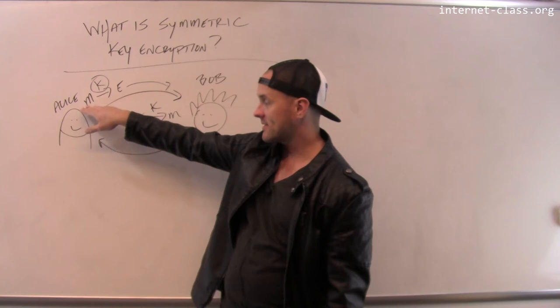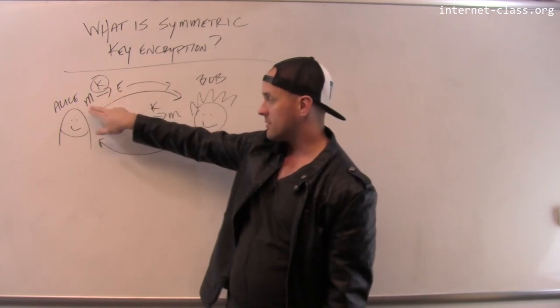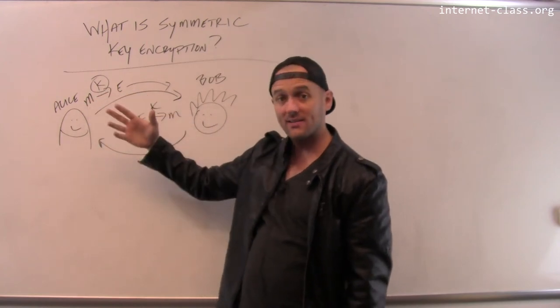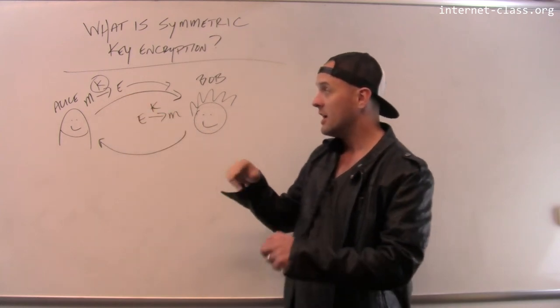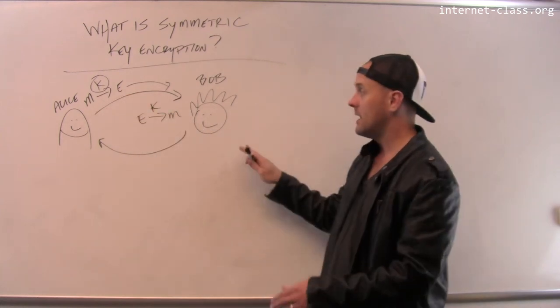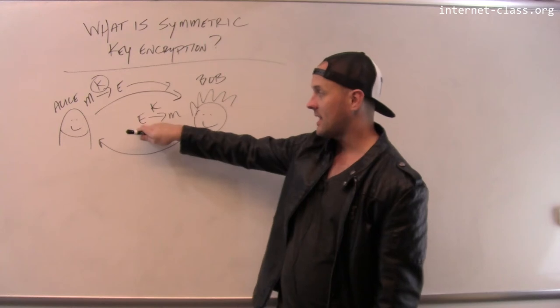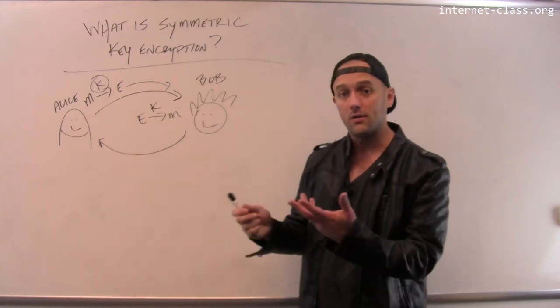Then Alice encrypts her message to, sometimes we call this the ciphertext. This is the plaintext. This is the ciphertext. She sends the ciphertext to Bob. Bob can decrypt the ciphertext E to recover the plaintext M using the same key K.